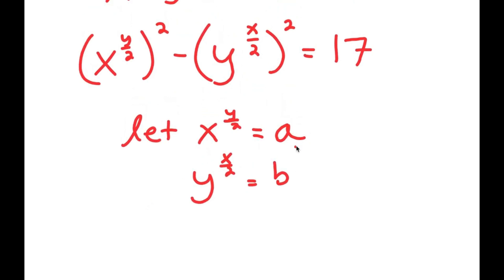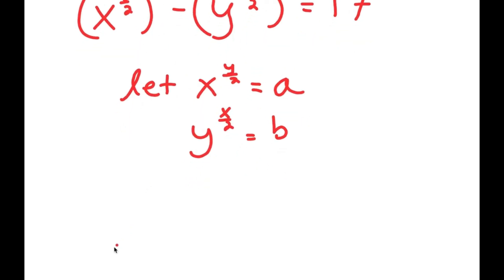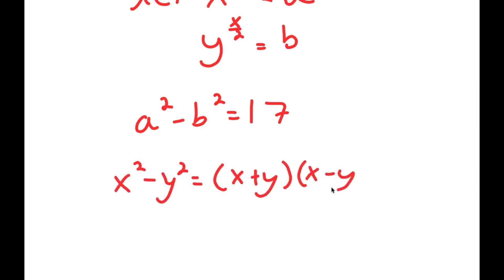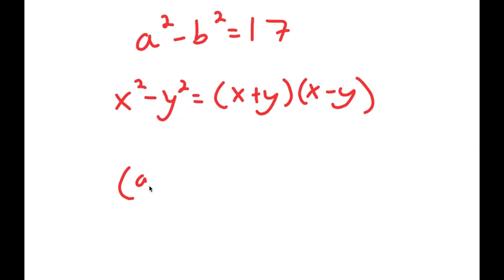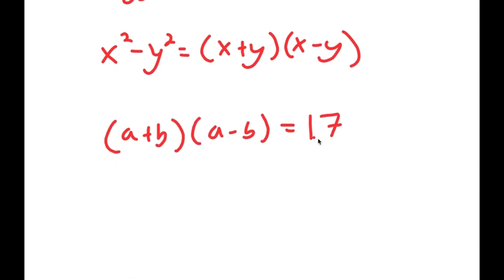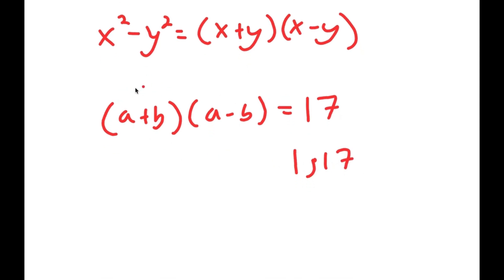If I substitute a for x to the power of y over 2 and b for y to the power of x over 2, I get a squared minus b squared is equal to 17. Now, if I have something in the form x squared minus y squared, this is equal to x plus y times x minus y. So a squared minus b squared equals a plus b times a minus b, which equals 17. The only factors of 17 are 1 and 17.